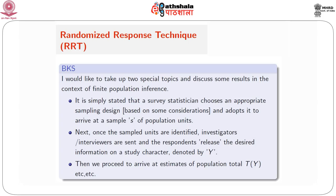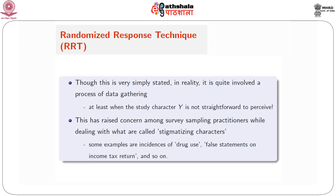This topic deals with a situation where a survey statistician chooses an appropriate sampling design based on some considerations and adopts it to arrive at a sample of population units. Once the sampled units have been identified, investigators or interviewers are sent and the respondents release the desired information in respect of a study character denoted by capital Y. Data gathered is Y_i for i in s, and we proceed to arrive at estimates of the population total T_Y, estimate of the variance, and so on. Though simply stated, in reality it is quite involved when the study variable Y is not straightforward to measure.